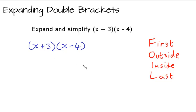We're going to be using the FOIL method, which is a way of reminding us which order to multiply the terms. FOIL stands for first, outside, inside and last. That's the order of the terms we're going to multiply.